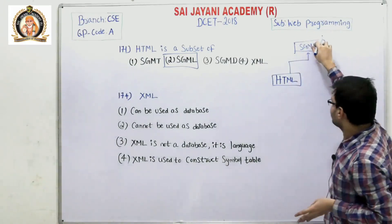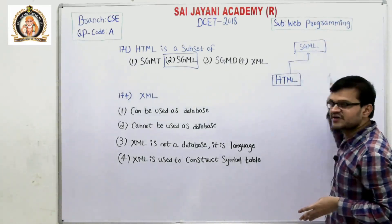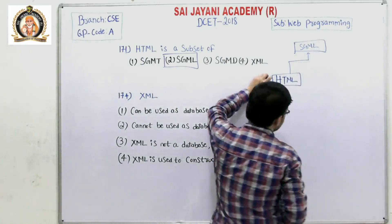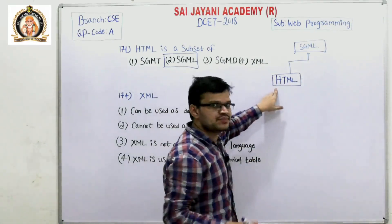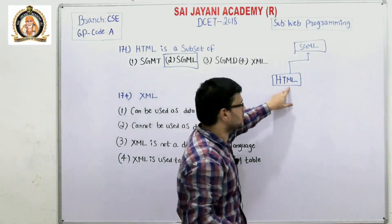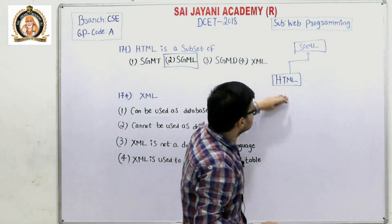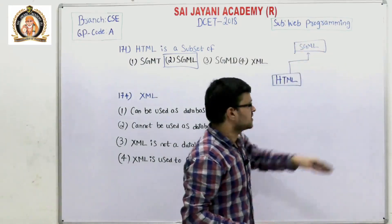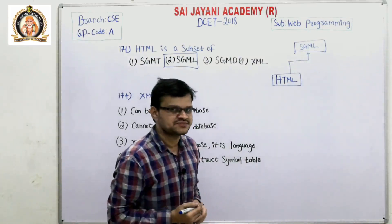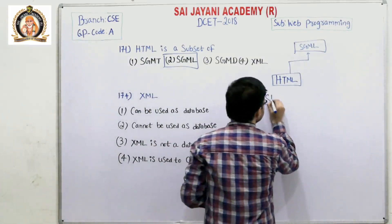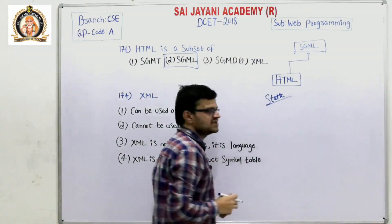SGML means Standard Generalized Markup Language. Similarly, HTML stands for HyperText Markup Language — H represents Hyper, T represents Text, M represents Markup, L represents Language. HTML is a subset of SGML. HTML is used to create web pages and web applications, and it is static in nature.